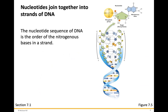The nucleotides join together in strands of DNA. The nucleotide sequence of DNA is the order of the nitrogenous bases in a strand. A DNA molecule is actually double-stranded — here's one strand and here's the second strand. The two strands are referred to as anti-parallel to each other, meaning they are going in opposite directions. Instead of reading DNA left to right, we read it five prime to three prime.